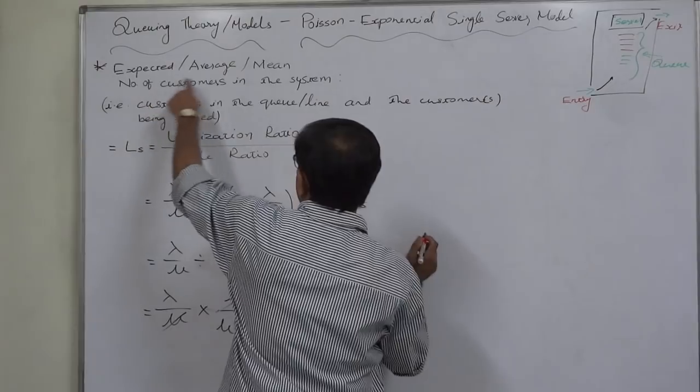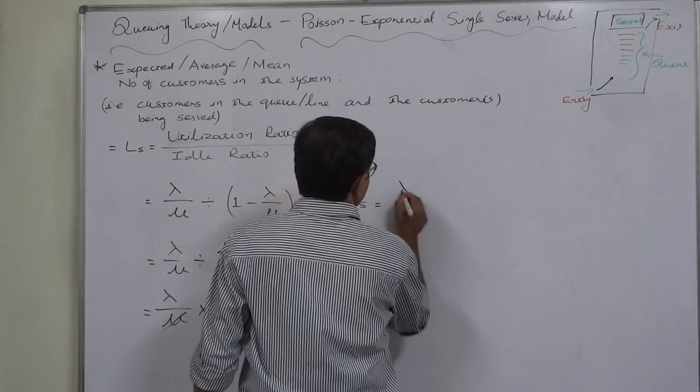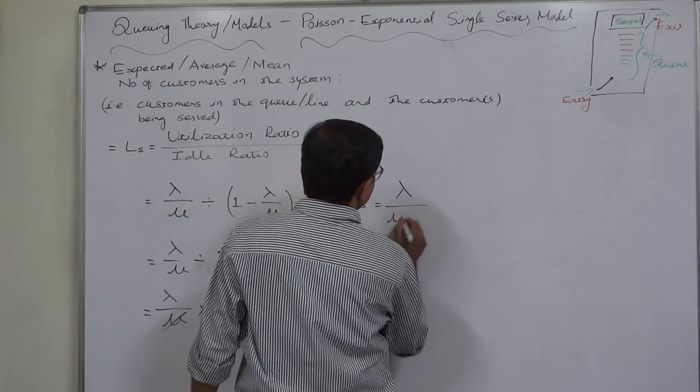So we can now cancel mu and mu, so ultimately the formula of LS or expected or average or mean number of customers in the system comes to lambda divided by mu minus lambda.